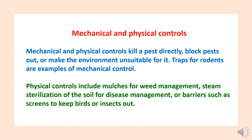The next component is mechanical and physical controls. Mechanical and physical controls kill a pest directly, block pests out, or make the environment unsuitable for them. Traps for rodents are examples of mechanical control. Physical controls include mulches for weed management, steam sterilization of the soil for disease management, and barriers such as screens to keep birds and insects out.